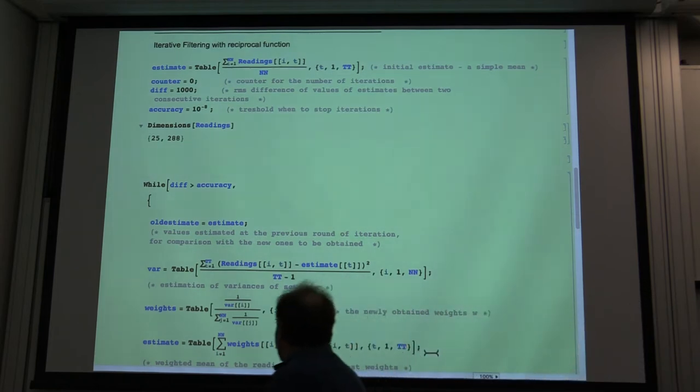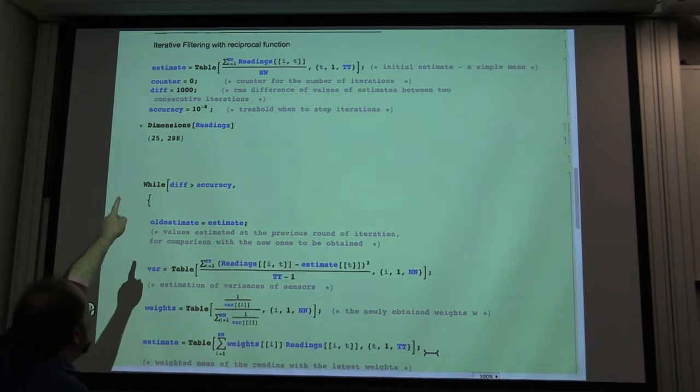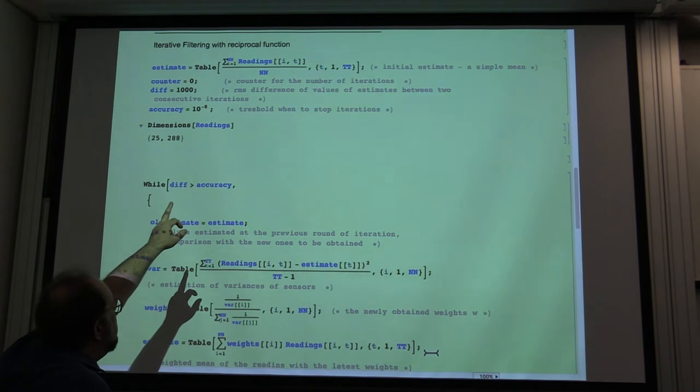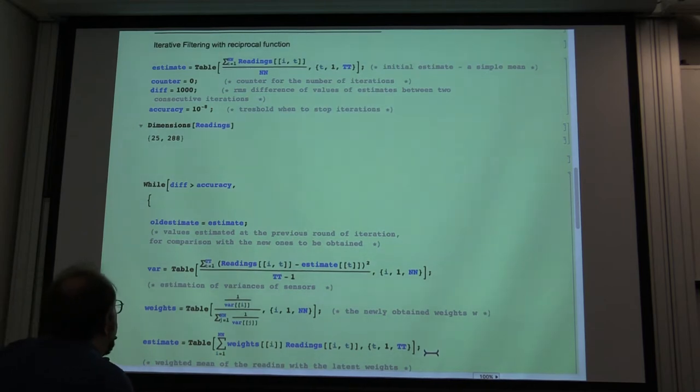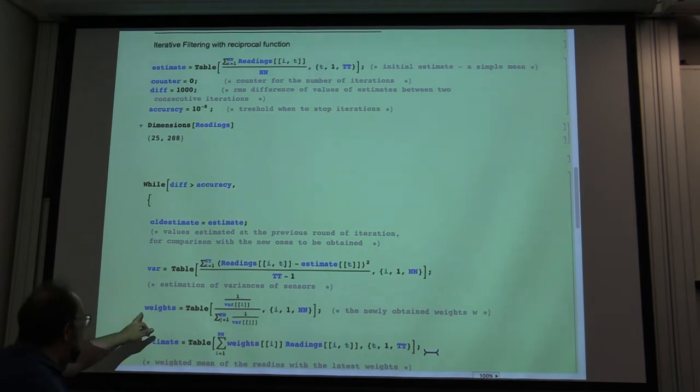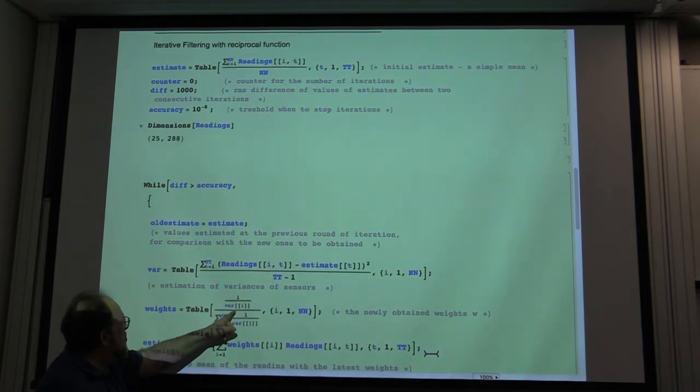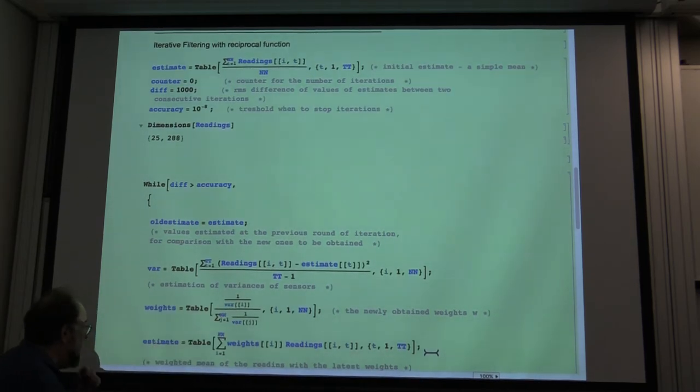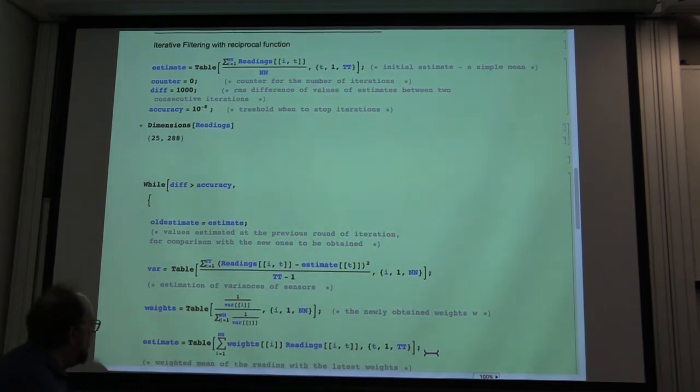We start by the initial estimate is simply the mean of all readings, right? The first line is the mean of all readings. And then what we do? We compute the variance, right? From the variance, we compute the weights that are reciprocals of the estimations of the variances. And then we produce the new estimate.